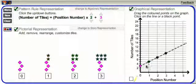In the graphical representation, either of the first two points can be moved to change the relationship.